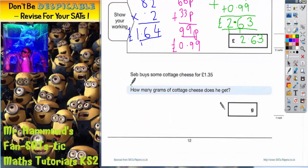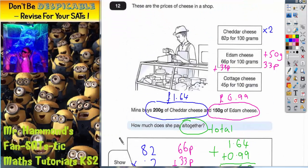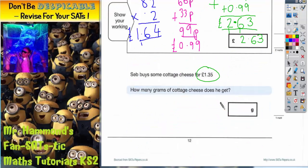It says Seb buys some cottage cheese for £1.35. How many grams of cottage cheese does he get? If we go back to the price list, cottage cheese is 45p for 100 grams, so I'm going to write this down here: 45p for 100 grams. Now he's actually going to spend £1.35.